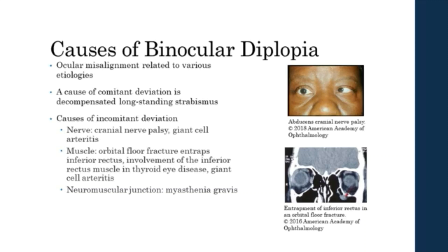Causes of binocular diplopia involving the nerve include cranial nerve palsy, which can be associated with microvascular ischemia, stroke, compression by aneurysm, tumor, vasculitis, or granuloma, head trauma, or demyelination. Causes involving the muscle include trauma leading to orbital floor fracture and thyroid eye disease restricting the inferior rectus muscle. Giant cell arteritis can lead to nerve or muscle ischemia. Binocular diplopia with incomitant deviation involving the neuromuscular junction can be caused by myasthenia gravis.